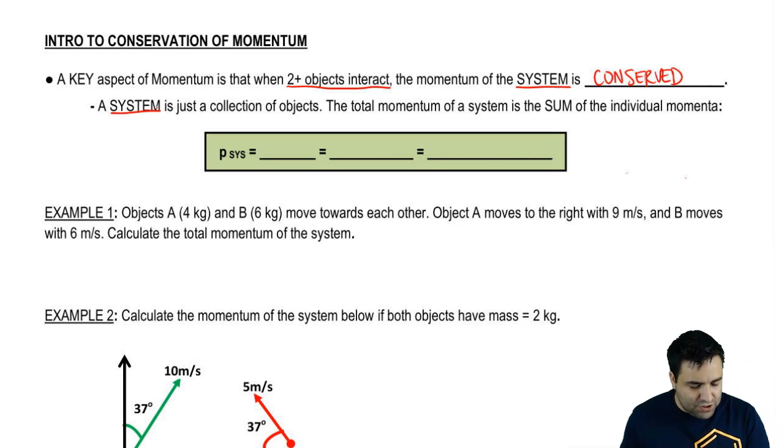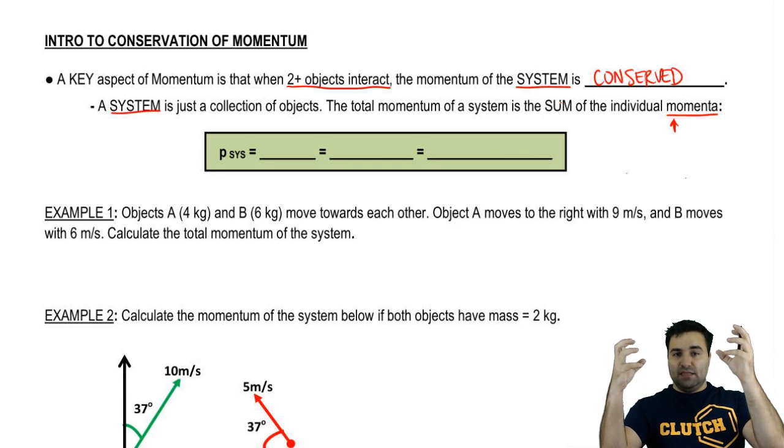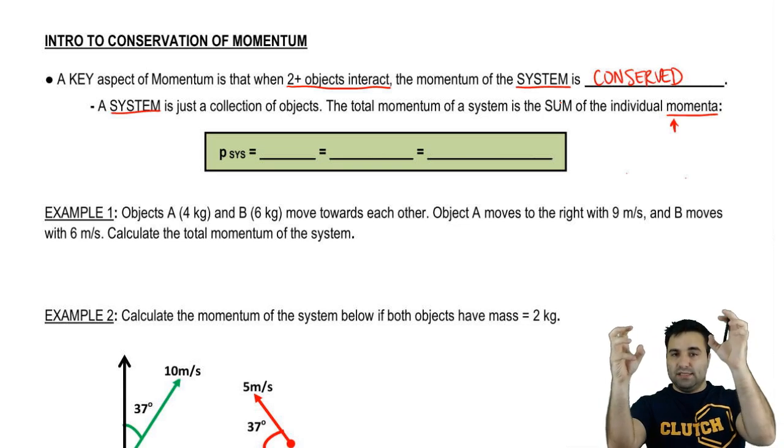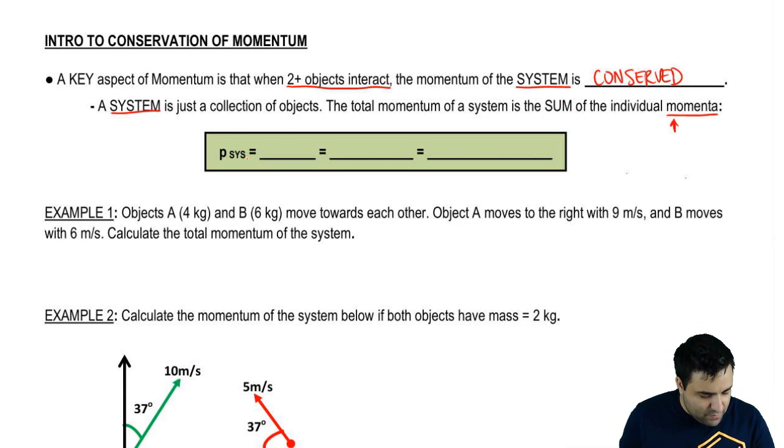Now remember, a system is just a group of objects, a collection of objects. The total momentum of a system is the sum of the individual momenta. Momenta is just the plural for momentum. So if I have two objects, the momentum of the system is just the momentum of one plus the momentum of the other.